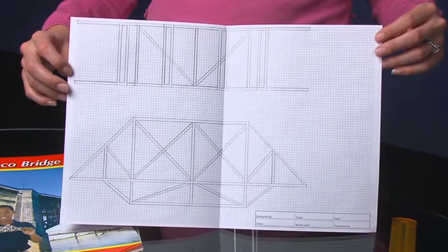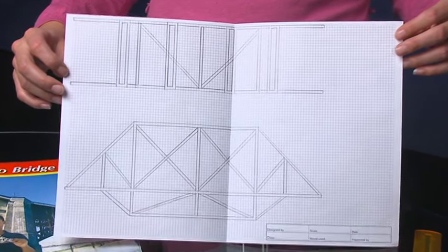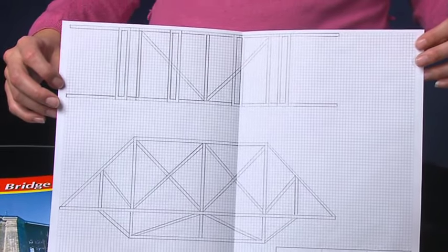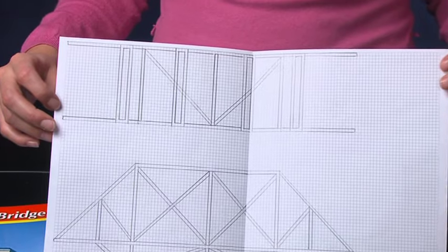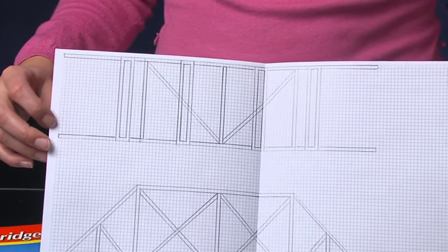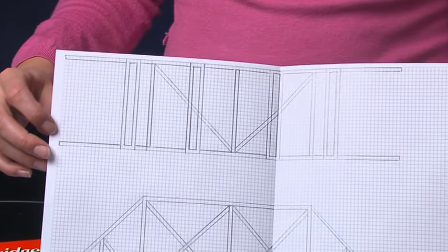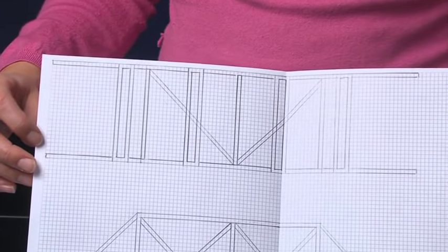Welcome back! You should have the side view of your bridge completed. Next, draw the top view to full scale and align it directly above the side view. The top view is what you would see if you were in an airplane looking down at the top of the bridge.